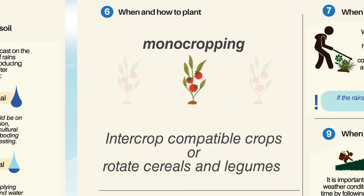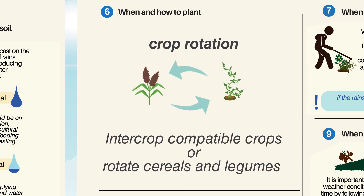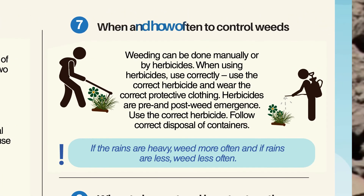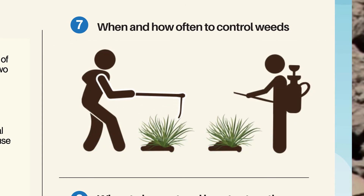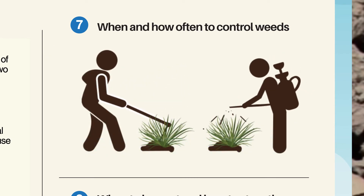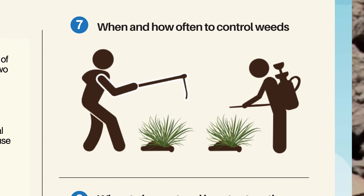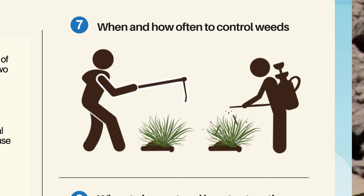Are you planting monocropping, intercropping, or crop rotation? Which crops are you pairing? The best recommendation is to intercrop compatible crops or rotate cereals and legumes. When and How Often to Control Weeds: Weeding can be done manually or by herbicides. Use the correct herbicide and wear the correct protective clothing. Herbicides are pre- and post-weed emergence. Use the correct herbicide and follow correct disposal of containers.